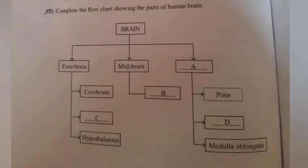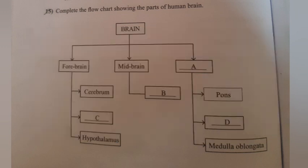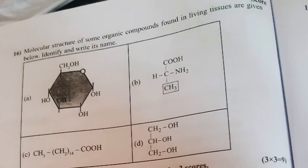Question 15: Complete the flowchart showing the parts of the human brain. Answer: A. Hindbrain, B. Corpora quadrigemina, C. Thalamus, D. Cerebellum.